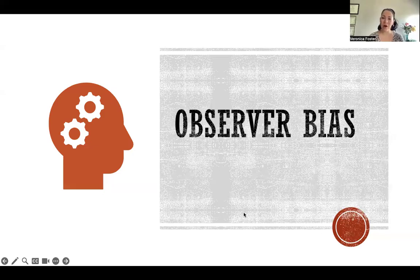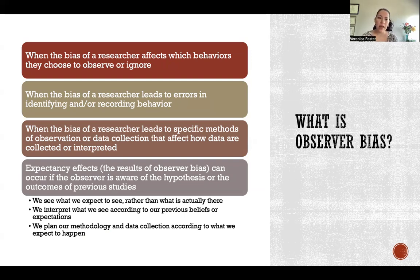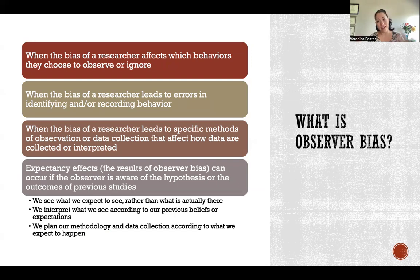In this video I'm going to tell you all about observer bias. Observer bias is when the bias of the researcher affects what the researcher is choosing to observe or ignore. If the observer expects something to happen in a certain way, or they expect only a certain behavior to be relevant to their study, then they might choose to only observe that certain behavior and ignore others. So it's important that we be aware of that bias and carefully consider all the different behaviors that might possibly be relevant to the study.